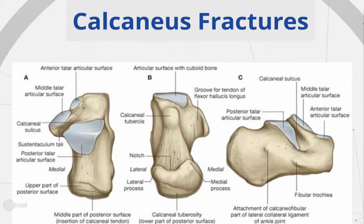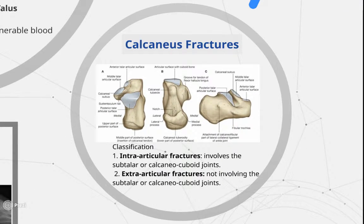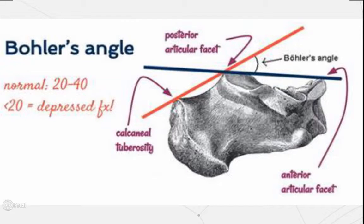Calcaneal fractures: this is the most commonly fractured tarsal bone and is often accompanied by disability. The mechanism of injury usually involves falling from a height onto one or both heels, where the calcaneus is rammed up against the talus and is split or crushed. This may be accompanied by other injuries including the spine, pelvis, and hip. Avulsion fractures may also occur. Calcaneal fractures are categorized as either extra-articular — not involving the subtalar or calcaneocuboid joints — or intra-articular, which do involve those joints. On x-ray, one must assess Bohler's angle, formed between a line from the calcaneal tuberosity to the posterior articular surface and another line from the posterior articular surface to the anterior articular surface. Bohler's angle is normally 20 to 40 degrees; if less than 20 degrees, it is indicative of a calcaneal fracture.